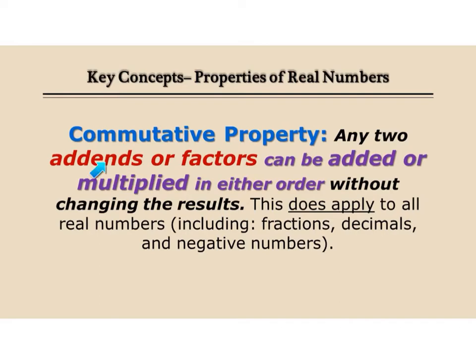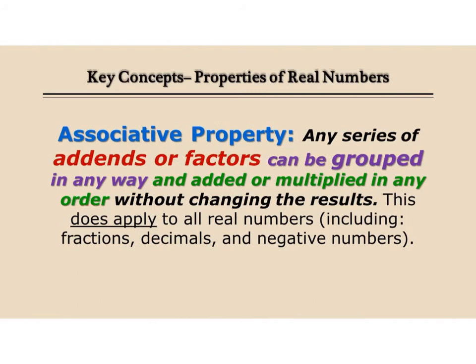Remember, the commutative property only works if you're adding or if you're multiplying. The associative property states that if you add or if you multiply groups of numbers — usually three numbers, which is what you'll see on a test or in a lesson — you can group them together, or put parentheses around any two of them, and it doesn't change the answer. It applies to all real numbers.